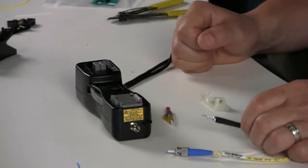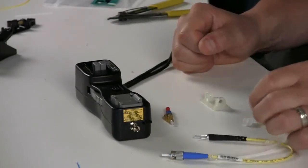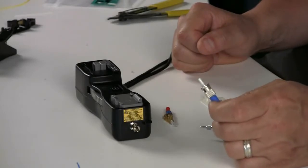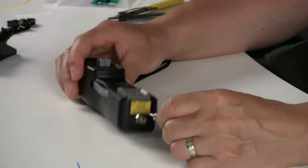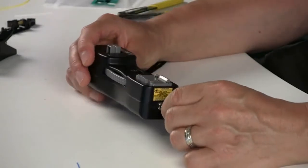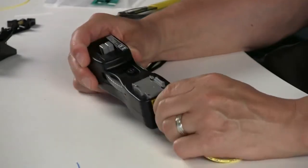Today we're doing LCs, so we're going to use the 1.25 millimeter cord. The ST portion of the patch cord lines up and goes into the LED portion of the OptiCam tool.